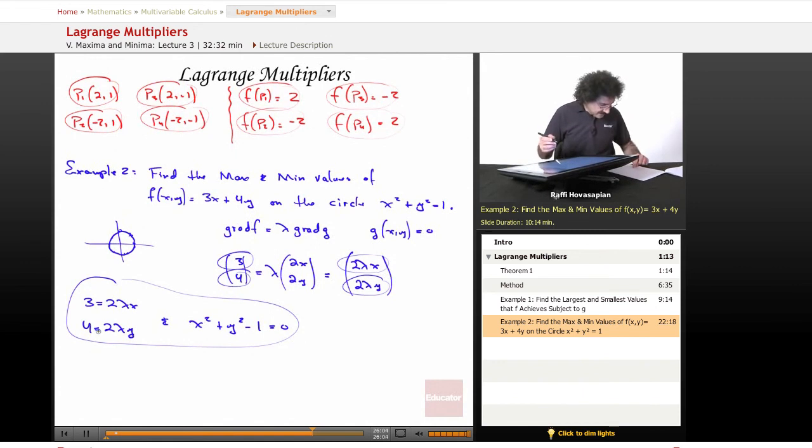The best way to approach this is since we have this equation and we have this, I'm going to go ahead and solve each of these equations, one for x and one for y. In this particular case, x is going to equal 3 over 2 lambda. And y, when I divide by 2 lambda, is going to be 4 over 2 lambda, which equals 2 over lambda. So now I have x and I have y, and now I'm going to take these values of x and y and put them into this equation to see what I get for lambda.